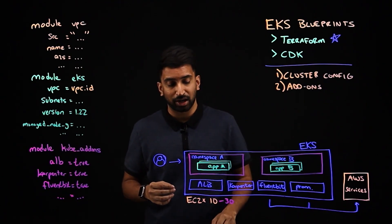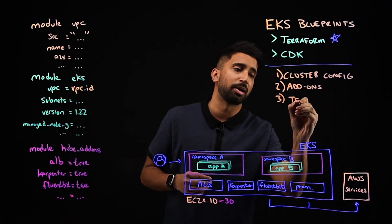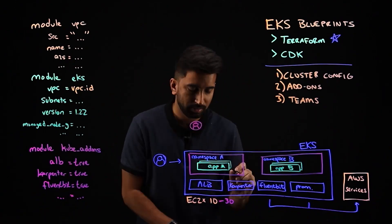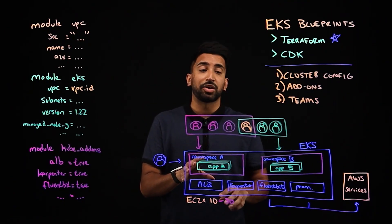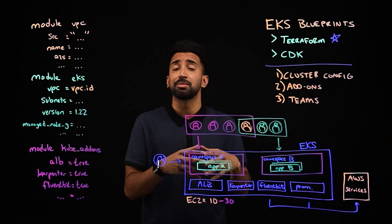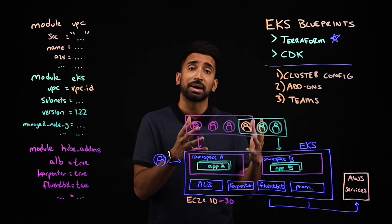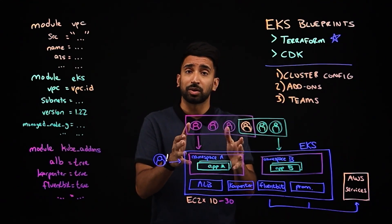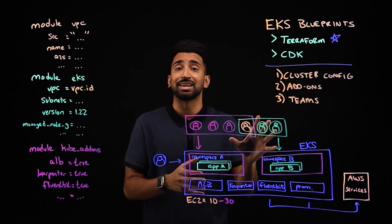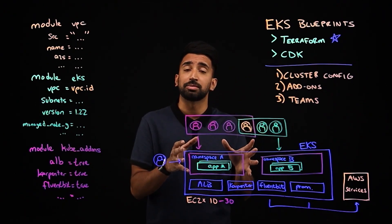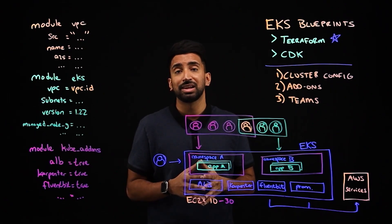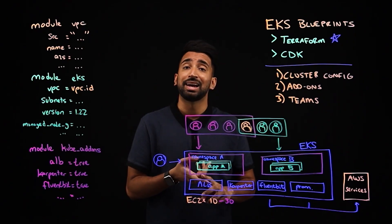Lastly, the third thing I want to talk about is multi-tenancy — I'll call it Teams. Here I have two different teams that need access to different parts of the cluster. We follow the principle of least privilege as a security best practice — certain members only have access to namespace A, others to namespace B, and maybe one person who needs access to both. This is one of the powerful things about setting up multi-tenancy using the Teams capability within EKS Blueprints, with integrations with RBAC and IRSA as well.